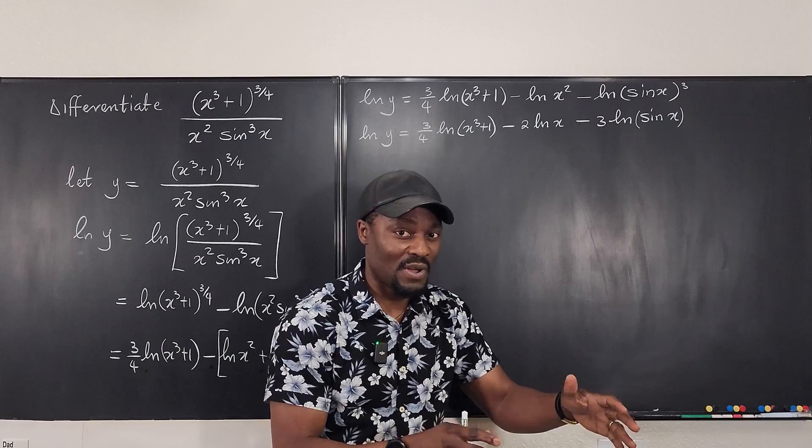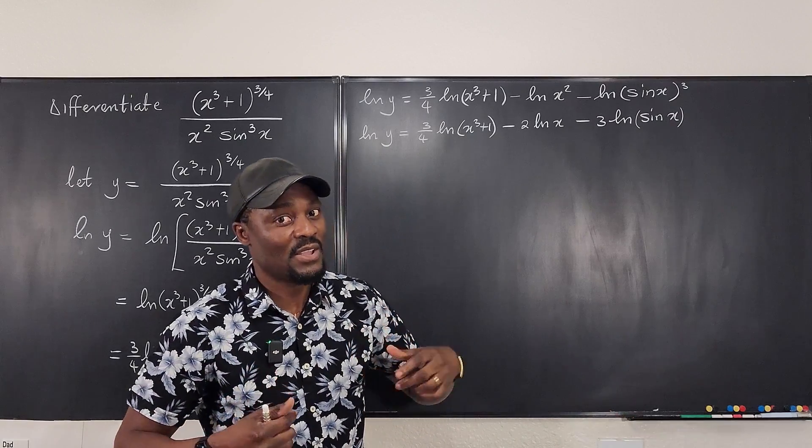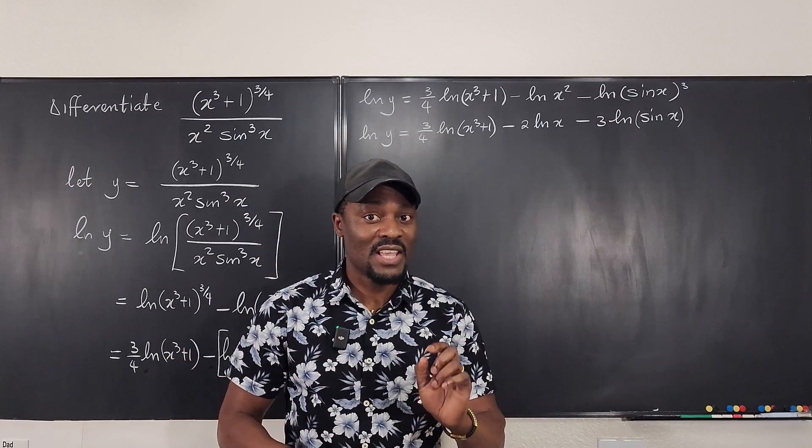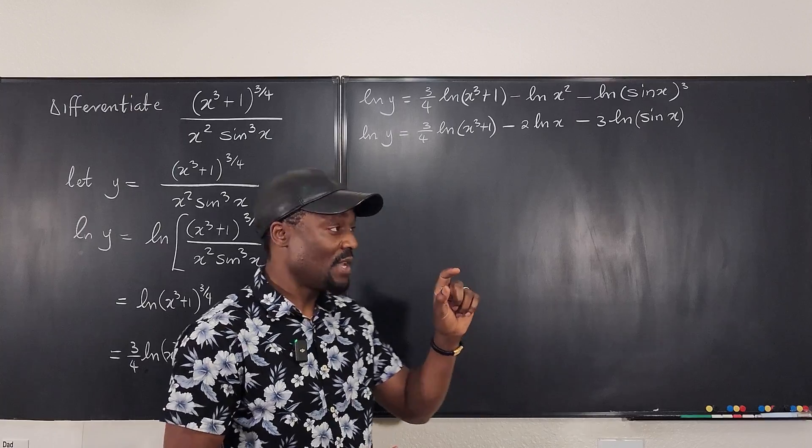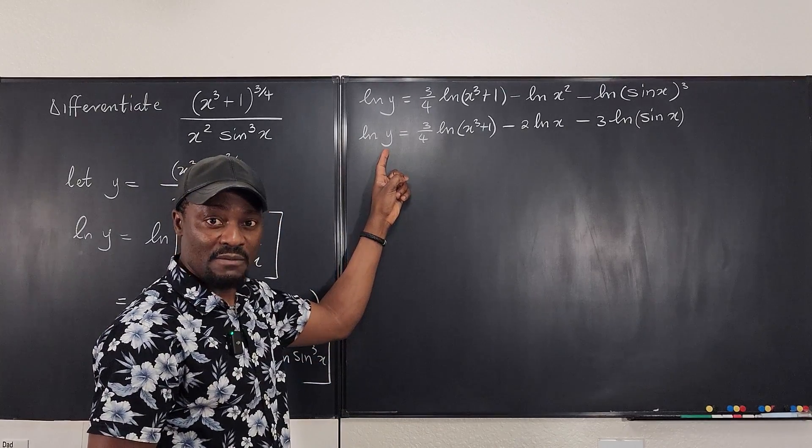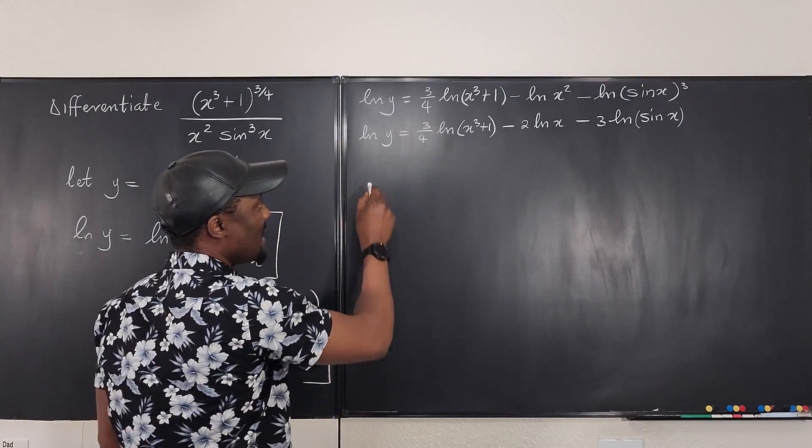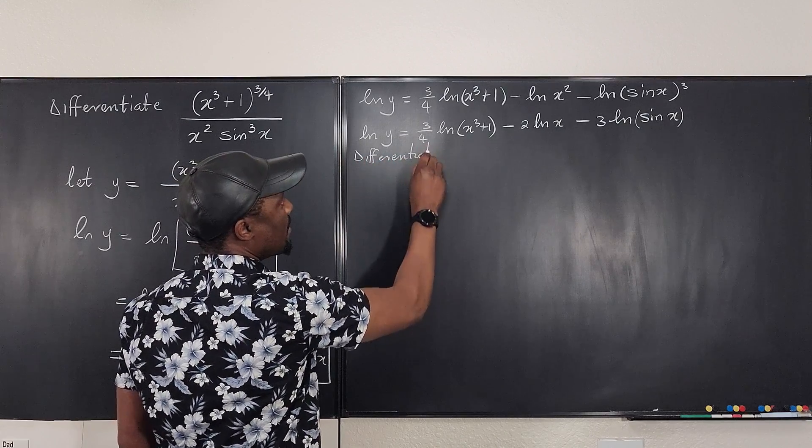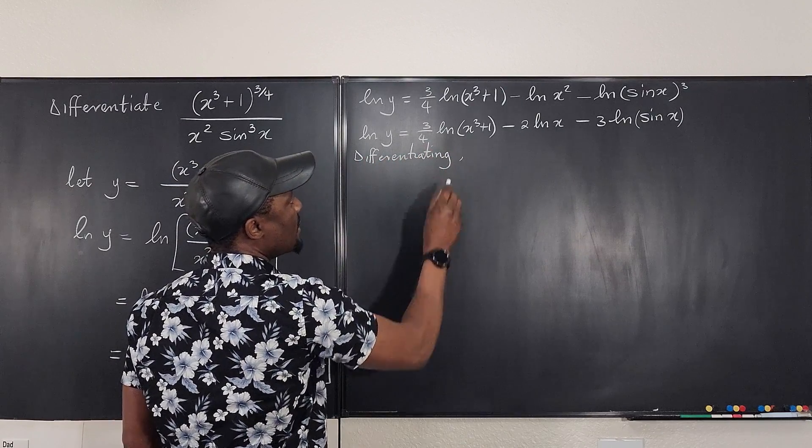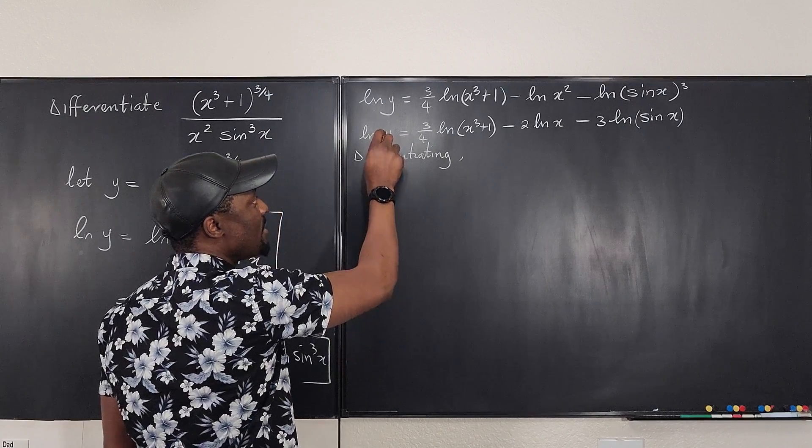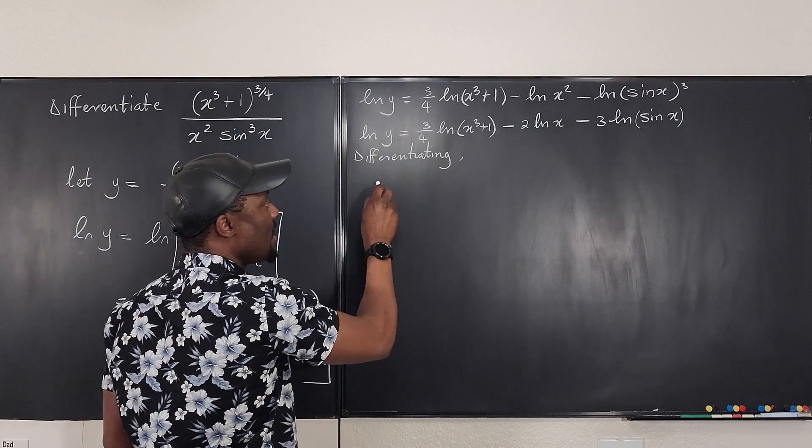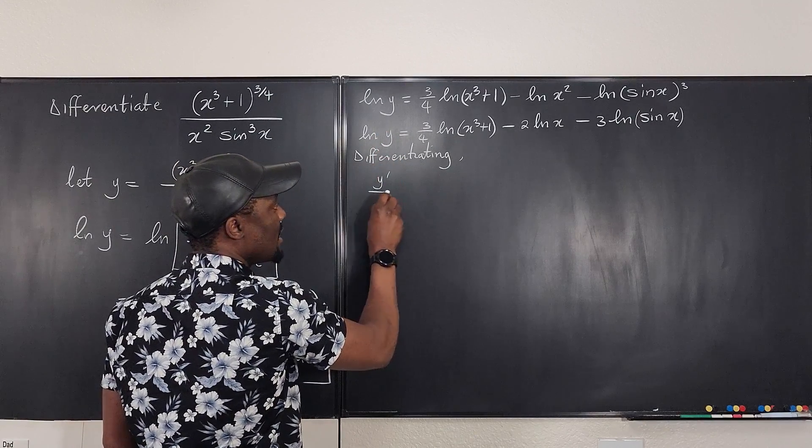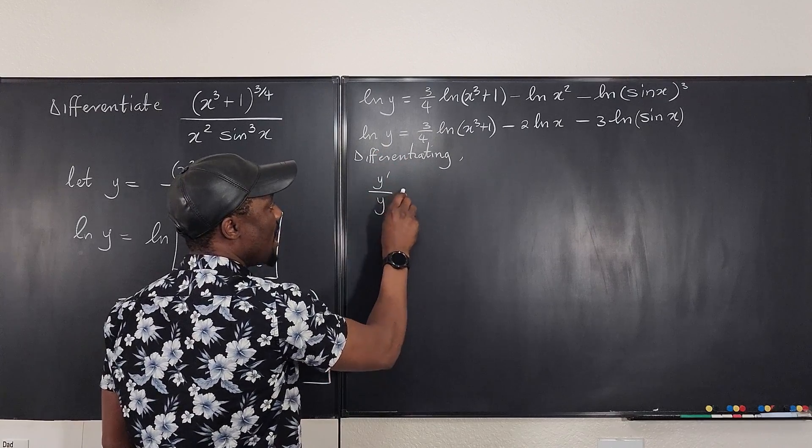For natural log functions, what I tell myself, which you should tell yourself, is it is the derivative of the argument divided by the argument, which is y prime divided by y.